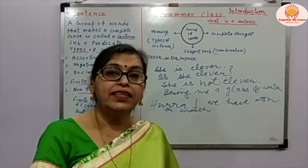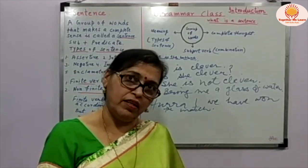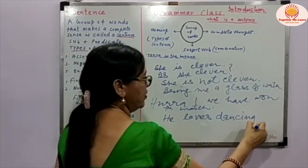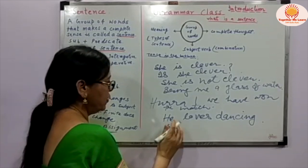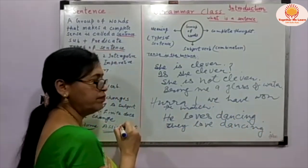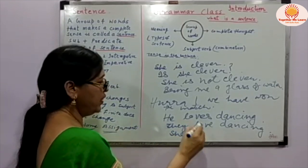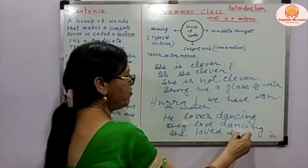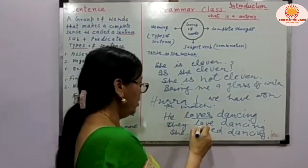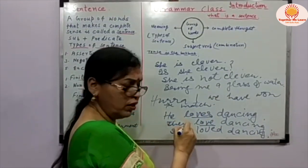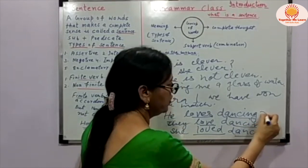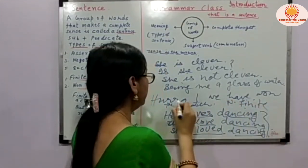But a non-finite verb is one that does not change with tense etc. For example: 'He loves dancing.' 'They love dancing.' 'She loved dancing.' Here you can see — loves/love/loved change according to subject and tense. He is singular so 'loves'; they are plural so 'love'; and the tense has been changed to past so 'loved'. But 'dancing' has not changed — it remains the same. So 'dancing' is non-finite, and the main verb is finite.